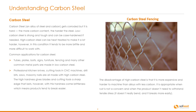Common applications for carbon steel: tubes, plates, bolts, signs, furniture, fencing, and many other common metal parts are made in low carbon steel. Professional kitchen knives, cutting tools, CNC machines, drill bits, saws, and masonry nails are all made of high carbon steel. The high hardness gives blades and cutting tools a sharp edge that lasts; however, with this hardness comes brittleness, meaning products tend to break easier. The disadvantage of high carbon steel is that it is more expensive and harder to machine. It is appropriate when rust is not a concern and when the product doesn't need to withstand tensile strength.